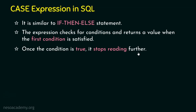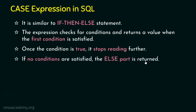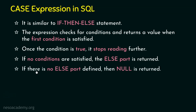In case no condition is matching, if no conditions are satisfied then the else part is returned. The else part is optional. If there is no else part defined in the query then null is returned. We know null is a special value in SQL. So null is returned only if there is no else part defined and there are no conditions satisfied.